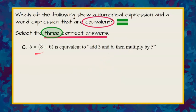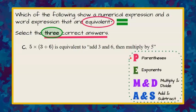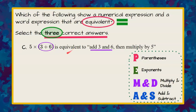Choice C: five multiplied by the quantity in parentheses three plus six — is it equivalent to 'add three and six, then multiply by five'? Going back to order of operations, our first step is to evaluate what's inside the parentheses. So we first add three plus six, and then multiply by five. That is exactly what the word expression says. They mean the same thing, so choice C is correct.